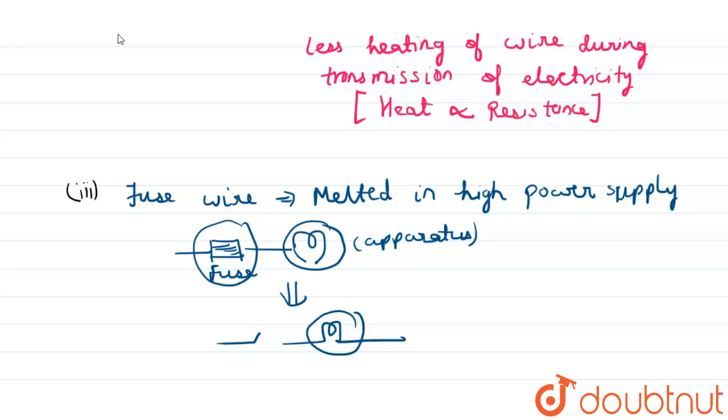Circuit becomes open and no current will pass through the apparatus, due to which our apparatus gets protected from high voltage. This is the reason why fuse wires are used in series with the apparatus. That completes the question. Thanks for watching, have a nice day.